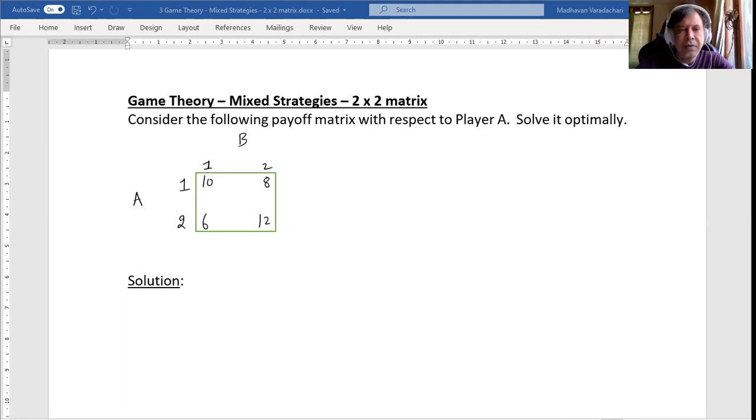Primarily for all games we will first check what are the row minimas. First row the minimum is 8, second row the minimum is 6. Then column maxima - first column the maximum is 10, second column the maximum is 12.